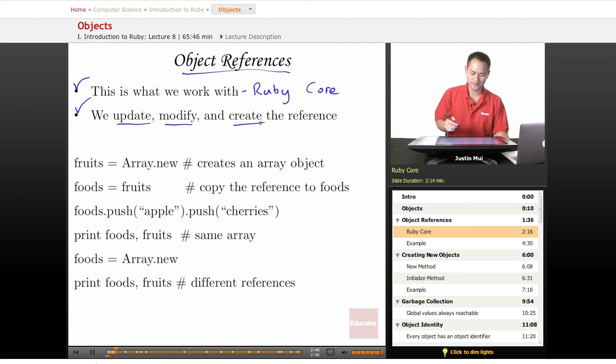So we have an example here. What we're going to do is, first, we're going to create an array.new. It's going to be stored as an array object into fruits. And you notice here, what we're doing is, we're creating another value called foods that equals fruits. What this does is, it's going to copy the reference to foods. So you'll notice here on the next line, we do a foods.push apple. So it stores an apple into the foods array. And then you do a .push cherries, which also pushes it into that foods array.